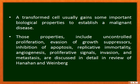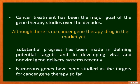A transformed cell usually gains important biological properties to establish a malignant disease. Those properties include uncontrolled proliferation, evasion of growth suppressors, inhibition of apoptosis, replicative immortality, angiogenesis, proliferative signals, invasion, and metastasis — discussed in detail in the review by Hanahan and Weinberg. Cancer treatment has been a major goal of gene therapy studies over the decades.